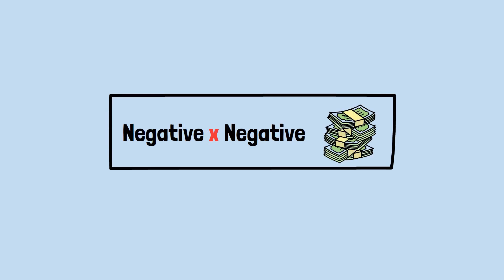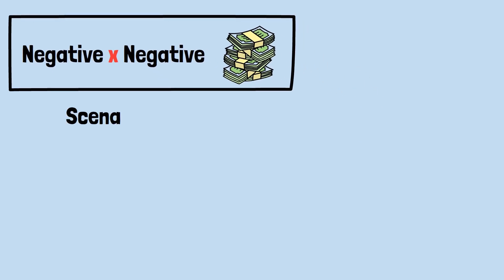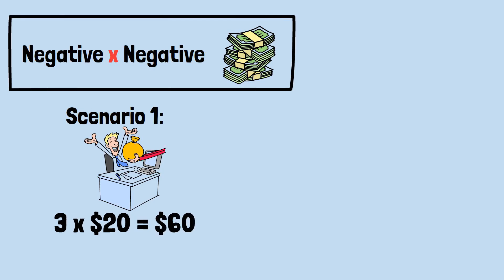Perhaps the most practical way to understand negative times negative is through money, specifically debt. Let's start with familiar territory. Scenario 1. I give you three $20 bills. Mathematical representation: 3 × $20 = $60. Your wealth increases by $60. This represents positive × positive = positive.